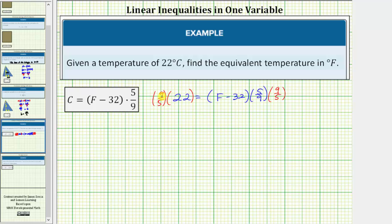So on the left side, 9 fifths times 22 is equal to 39.6. So we have 39.6 equals. Now we should recognize that 5 ninths times 9 fifths is equal to one because these are reciprocals. But if we don't simplify, there's one 5 and 5 here and here, and there's one 9 and 9 here and here, giving us a product of one. So the right side simplifies nicely to F minus 32.